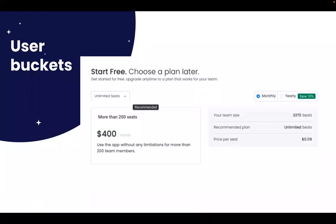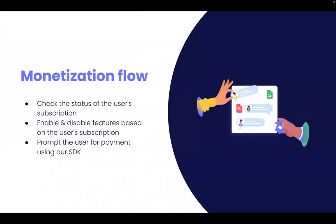Now that you're an expert on the pricing and plans that we offer, let's talk about how to implement this on your app. Essentially, you'll want your application to adhere to the following flow. First, you'll check the status of the user subscription. Given that user subscription, you'll enable and disable features according to the plans you've determined. And finally, you'll prompt the user for payment if it's time for an upgrade. Let's go ahead and take a look at what this looks like in action — I'll walk you through how you can implement and test this flow.